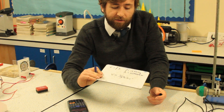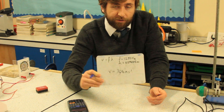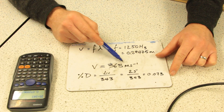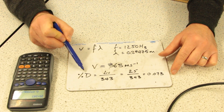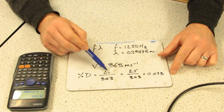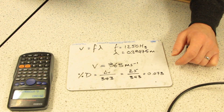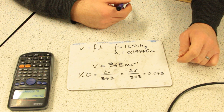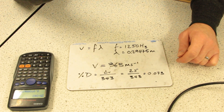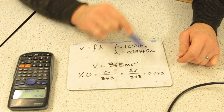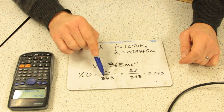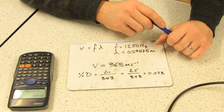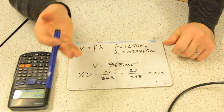Not bad, considering the official figure is somewhere in the region of 340 metres per second. Our calculated value is 368 m/s. Our percentage difference is the difference in v over the quoted book value — 343 m/s, thank you Wikipedia. The difference is 25, so the percentage difference is 25/343 = 0.073, or 7.3% — not bad.